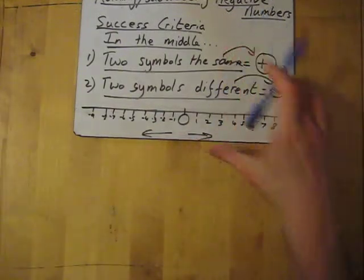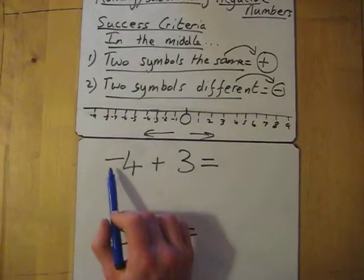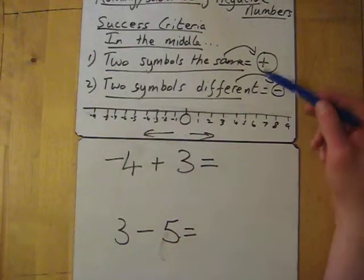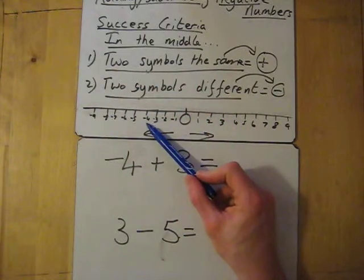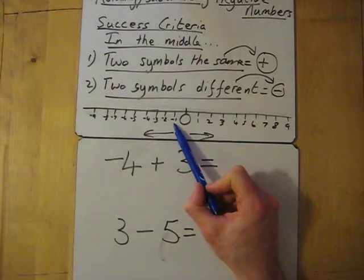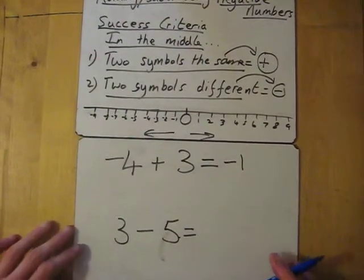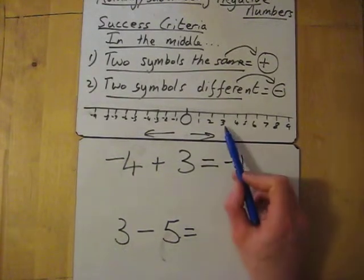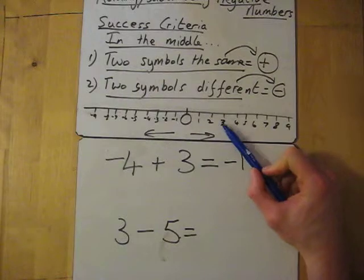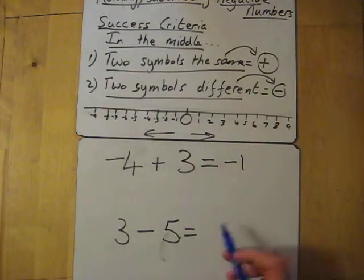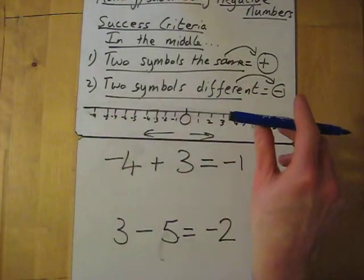I'll do a couple of examples and leave this on the screen so you'll be able to see what's going on. First one: we've got negative 4 add 3. If I look in the middle, it's just an add, so I have to add 3 onto it — that means it's going to get bigger. So if I'm at negative 4 and I add 3, that takes me to negative 1. Next one: I'm at 3 and I take away 5 — just subtract 5. Starting at 3, take away 5, that takes me to negative 2. See how this number line helps a lot? If you're adding, you're going up the scale; if you're subtracting, you're going down.